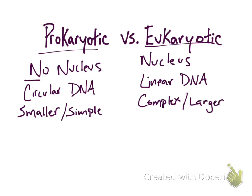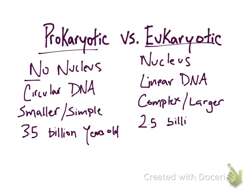Also, prokaryotic cells have been on Earth for a longer time. They have been on Earth for 3.5 billion years, while eukaryotic cells are a whole billion years younger — they have been here for 2.5 billion years.